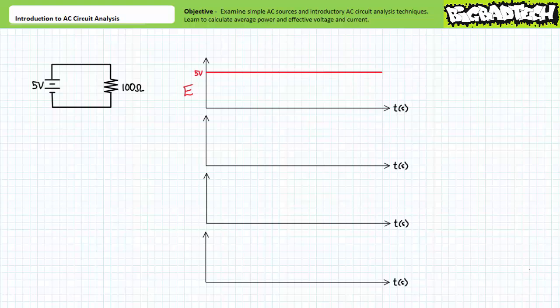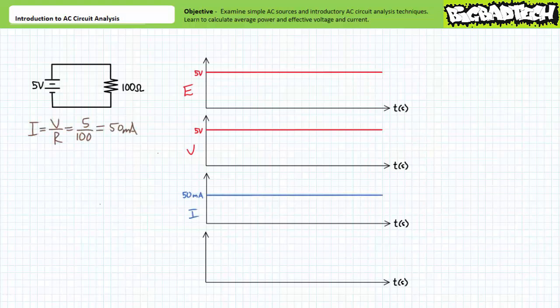Let's begin with the assumption that you have a working knowledge of DC circuit analysis. Recall that a fixed DC source is one that does not vary polarity nor magnitude as a function of time. Consider a fixed 5-volt DC source and a 100-ohm resistive load. The voltage drop across the 100-ohm resistor would be a fixed 5 volts. The source would supply a constant 50 milliamps of current, and the resistive load will constantly dissipate 250 milliwatts of power.